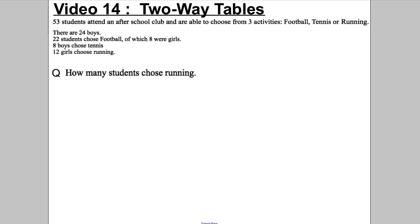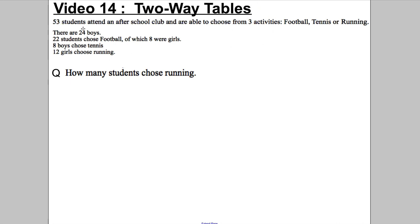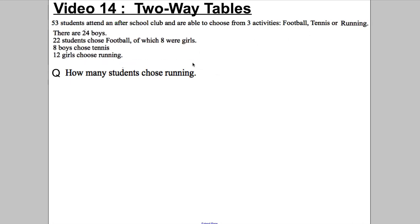So the topic we're doing is two-way tables and make a revision card using this example. Copy this example on your revision card. The best way to understand two-way tables is just to do an example. You're given some information and asked about missing information that is associated with this, and the best way to answer these questions and represent this is in what's called a two-way table.